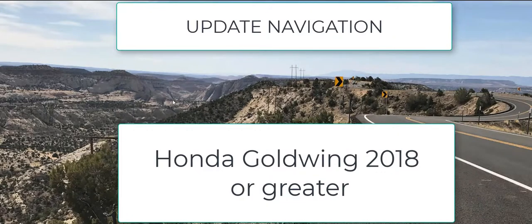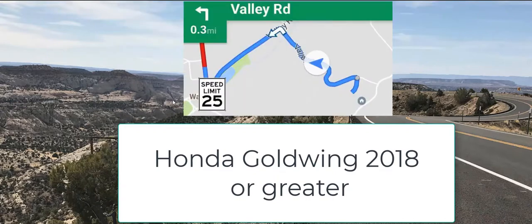On your bike, make sure it is updated with all the latest navigation software. On the early Gold Wings there was a problem with the navigation reading the maps, and that has been resolved with the latest versions. To confirm you're on the latest version, the speed limit sign will appear on the maps. If it doesn't appear, check again to make sure you're on the latest version — this will make a big difference in navigating.